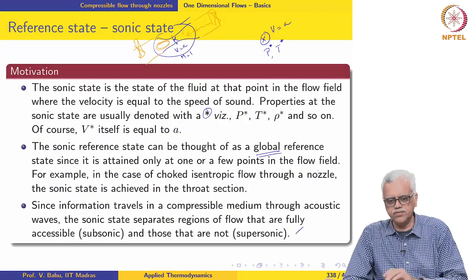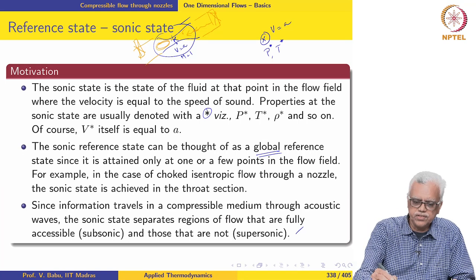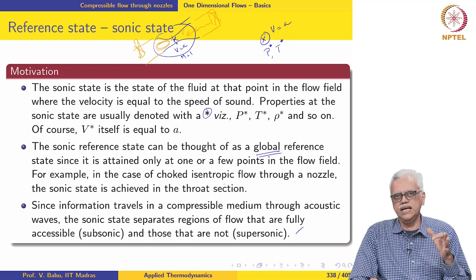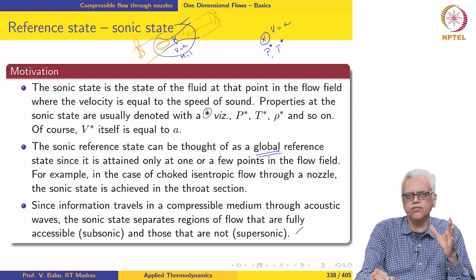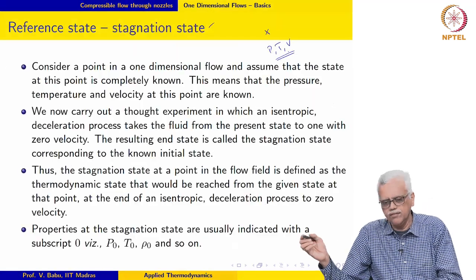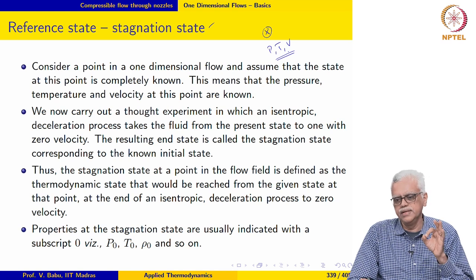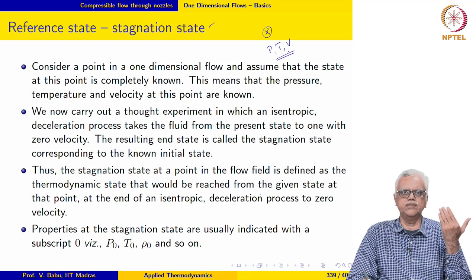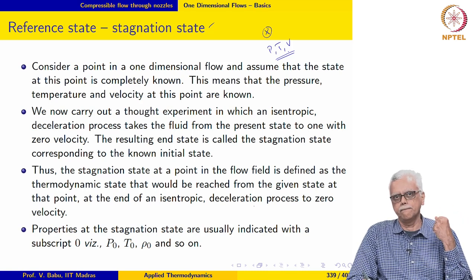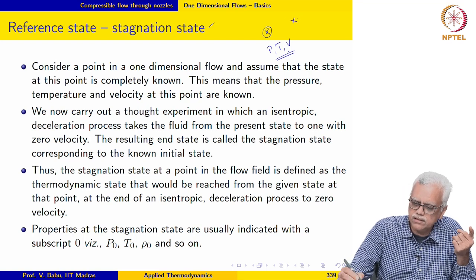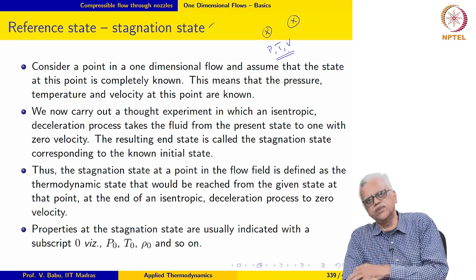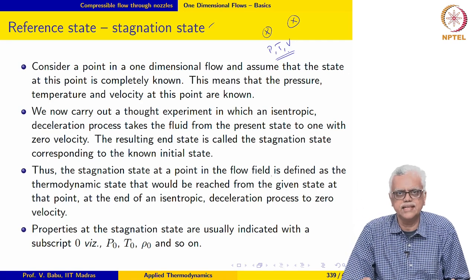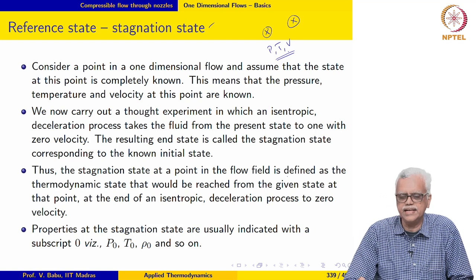The sonic state is a global reference state — there are normally only one or two sonic states in the entire flow field and the sonic state is relevant for the entire flow. The stagnation state, by contrast, is a local reference state. We take a fluid element at a specific thermodynamic state and decelerate it isentropically to zero velocity; the resulting stagnation pressure and stagnation temperature are local to that point. At another point in the flow field, repeating the same experiment may yield a different stagnation pressure and stagnation temperature.